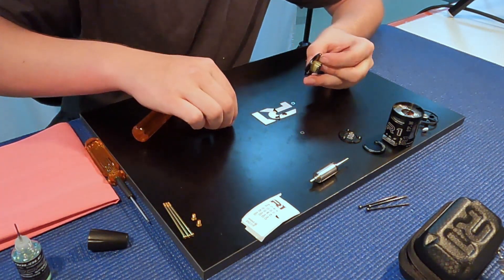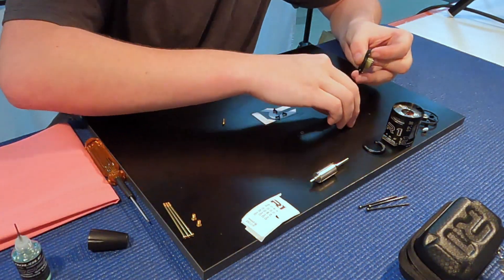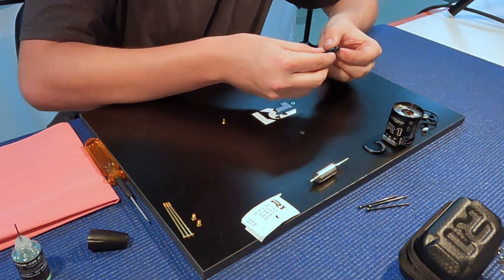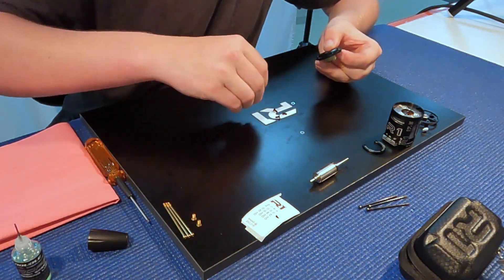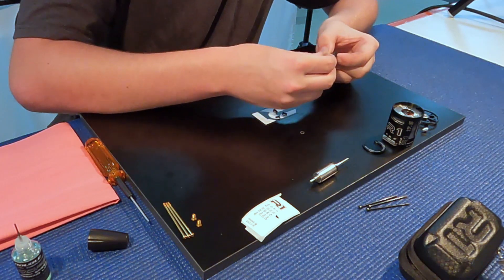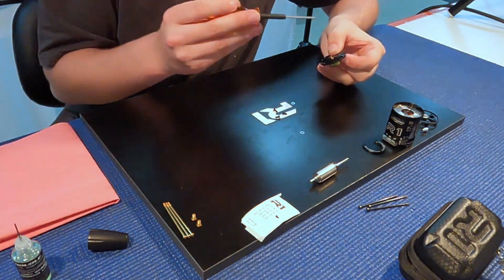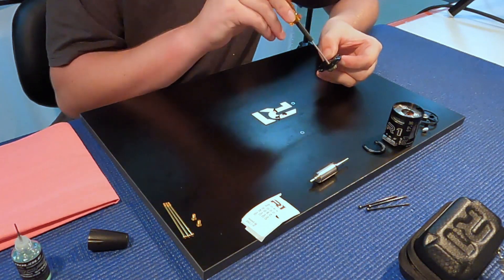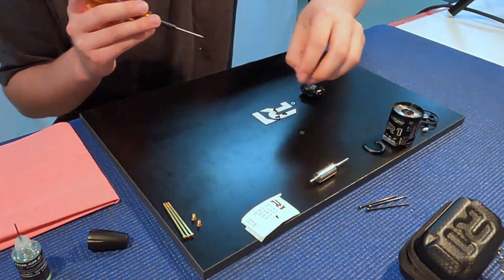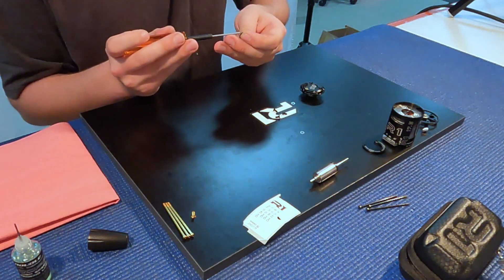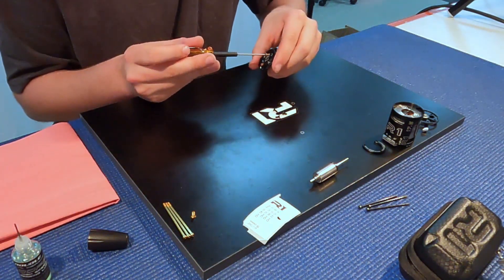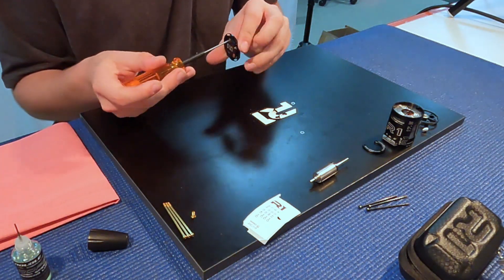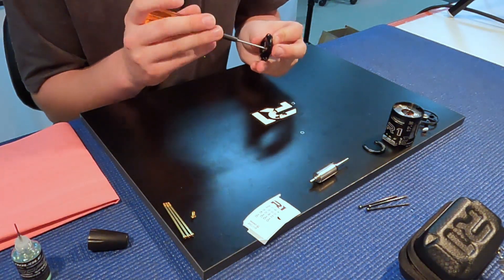And then we're going to use our titanium screws, which is a 1.5. Make sure you have the back plate on. Just like so, put all three in, but don't tighten them all the way. Start that way you can line them up.